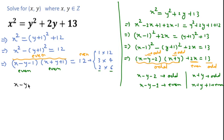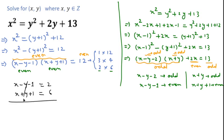This means we can write x minus y minus 1 equals 2 (since it is smaller) and x plus y plus 1 equals 6. Adding these two equations, we get 2x equals 8, so x equals 4. Substituting x equals 4 back gives y equals 1.